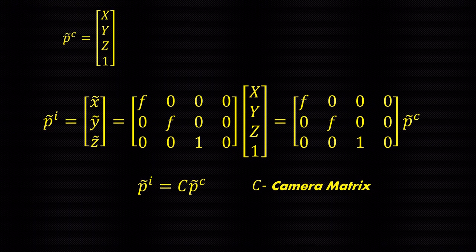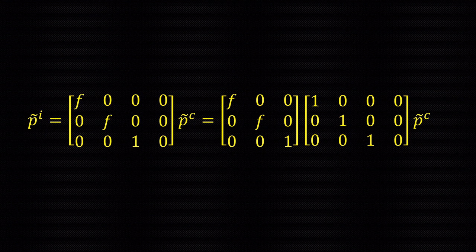Transformation matrix become a 3 by 4 matrix which is called camera matrix. We can split the camera matrix into the multiplication of a 3 by 3 matrix and 3 by 4 matrix. Second matrix is called a projection matrix.